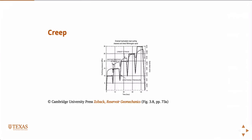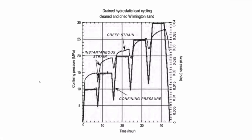Here's an example of actual test data. This line here is the confining pressure — this is hydrostatic loading, where you have a sample in a pressure bath, pressurized on all sides. At some point that pressure is held constant and strain is measured. You can see this curve is the strain — even though the pressure is constant, the material continues to deform over time. That's creep.